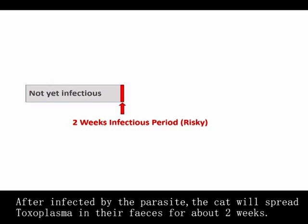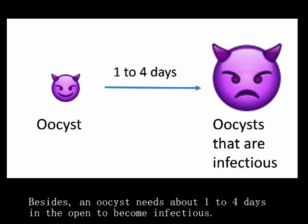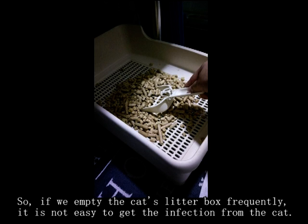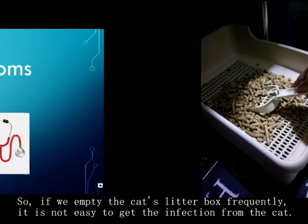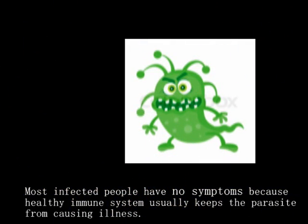After being infected by the parasite, the cat will spread Toxoplasma in its feces for about two weeks — that is, a cat sheds oocysts for only about two weeks in its entire life. Besides, an oocyst needs about 1-4 days in the open to become infectious. So, if we empty the cat's litter box frequently, it is not easy to get the infection from the cat.